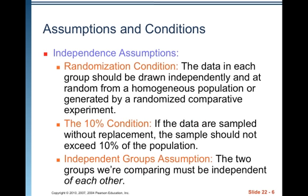Assumptions and conditions. To be able to make the independence assumptions we need to make, first thing we check is the randomization condition. The data in each group should be drawn independently and at random from a homogeneous population or generated by a randomized comparative experiment. There needs to be randomization.